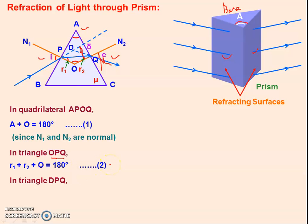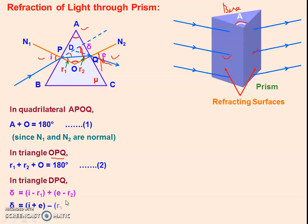Now in triangle DPQ, this is D, P, and Q. This angle will be I minus R1 — since this full angle is I and this part is R1, the remaining angle is I minus R1. And this angle is E minus R2. Now δ is the exterior angle, and the interior opposite angles are I minus R1 and E minus R2. So we can write δ equals (I minus R1) plus (E minus R2). After rearranging, δ equals I plus E minus (R1 plus R2).